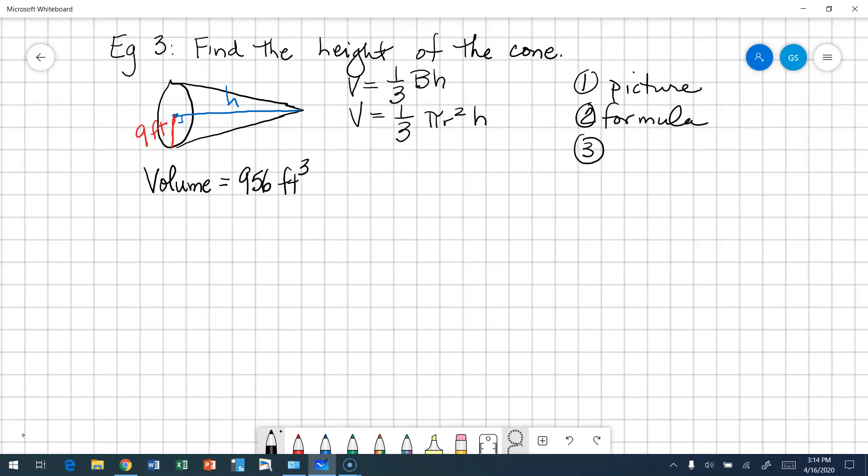Next thing is, what are our facts? What do we know? Well, we know our radius. Our radius is 9 feet. We know our volume, which is 956 feet cubed. Do we know our height? Height is our unknown. So our next step is going to be plug it in, plug in those values that we know. Volume 956 equals 1 third pi, the radius 9 squared, and we don't know the height.